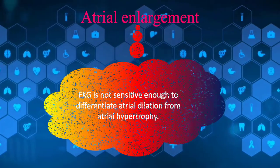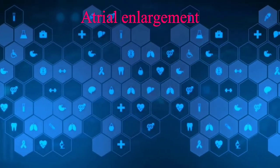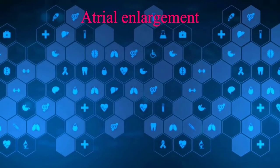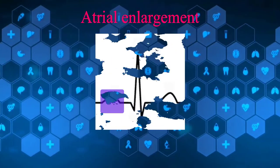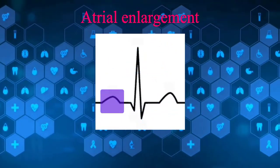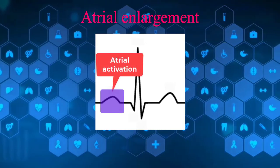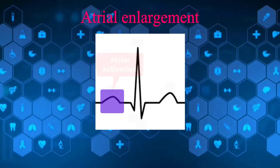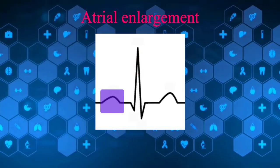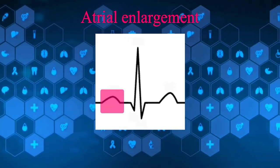Let's see what kinds of electrocardiographic findings may be associated with atrial abnormalities. The P wave is the first deflection on the EKG strip and indicates atrial activation. So we expect to detect atrial abnormalities by examining P wave morphology.